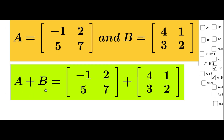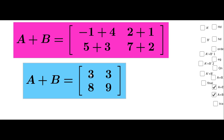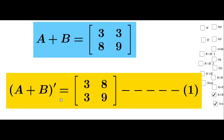A plus B equals matrix minus 1, 2, 5, 7 plus matrix 4, 1, 3, 2. Adding element-wise: minus 1 plus 4, 2 plus 1, 5 plus 3, 7 plus 2. So A plus B equals matrix 3, 3, 8, 9. Then A plus B whole transpose equals matrix 3, 8, 3, 9.